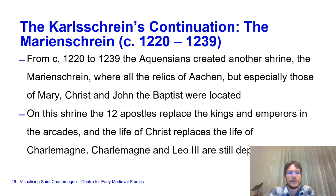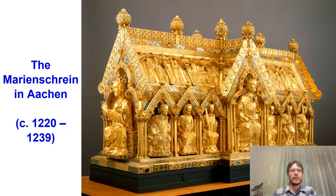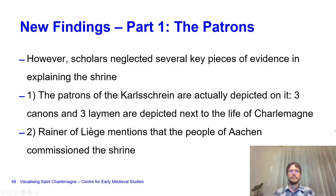Charlemagne and Leo III are still depicted on the Marienshrine, presenting a Christ-centric plan. This is what it looks like: Christ, Charlemagne, the life of Christ depicted on the roof, and six of the 12 apostles visible on this side.